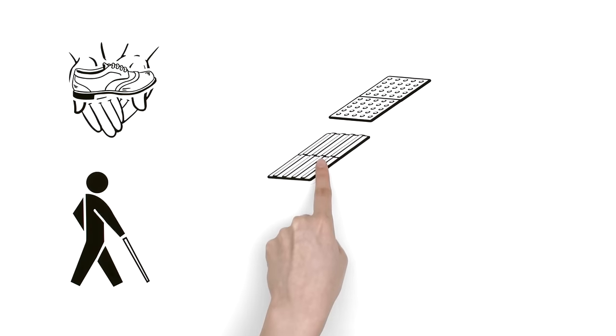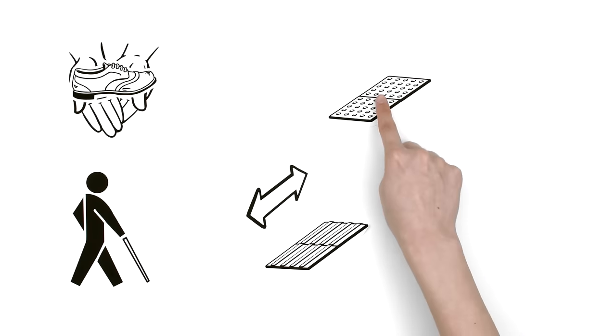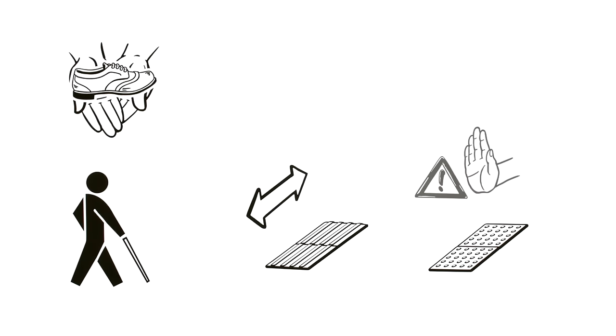There are two types. One is a directional guide. The other warns of possible danger nearby. The tiles are easily identified with a cane or by how they feel under your feet.